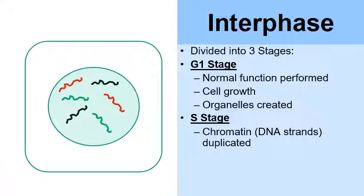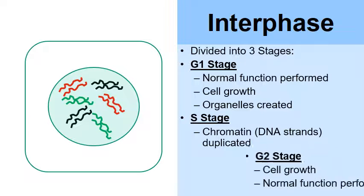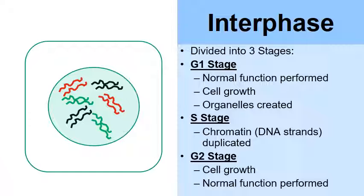The second stage is the S stage — S stands for synthesis, meaning to make or copy something. During the S stage, the active form of DNA called chromatin is copied. For a short time, cells actually have double the amount of DNA because identical copies of all the chromatin are created.